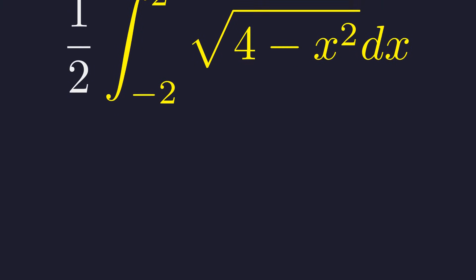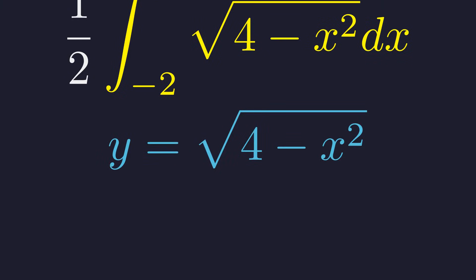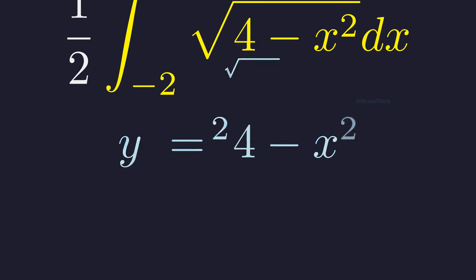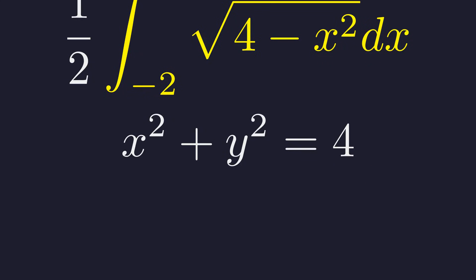What shape is this? Well, y is a square root, so it's non-negative. Let's square both sides to see what we're really dealing with. Squaring gets rid of that square root. Rearranging terms gives us something you've definitely seen before: the equation of a circle centered at the origin with radius two. And since y is non-negative, we're just looking at the upper semicircle.